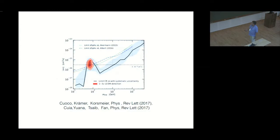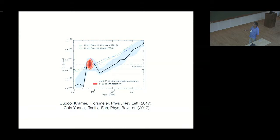Coming back to those two PRL papers, they plot the dark matter cross-section for bb-bar versus mass and also account for gamma rays from the galaxy. Anything above the exclusion curve is ruled out, but the antiproton signal sits within the allowed region. There is some tension with exclusion limits from gamma rays coming from spheroidal galaxies, but there is still some evidence for a signal. AMS-02 also saw antihelium and the boron-to-carbon ratio, which may hint at dark matter.